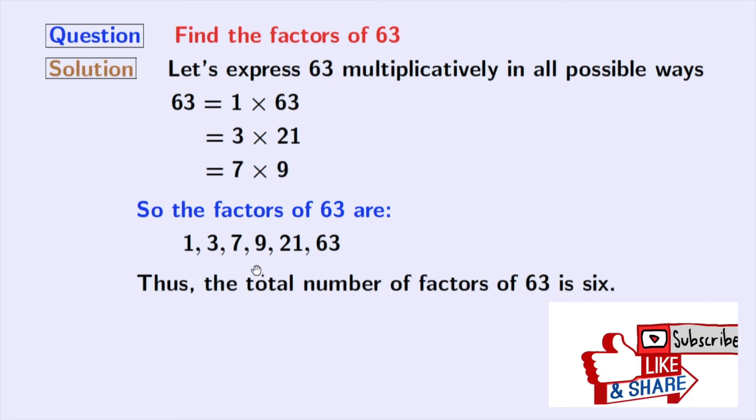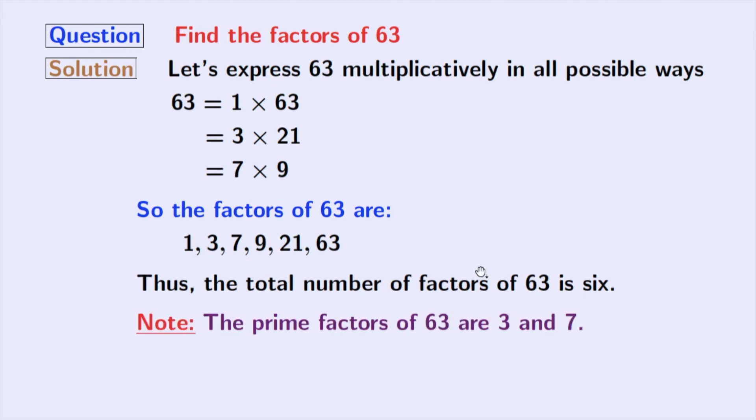Now, if we look at these factors, we can see that 3 and 7 are prime numbers because these two numbers do not have any divisor other than 1 and that number itself. So the prime factors of 63 are 3 and 7.